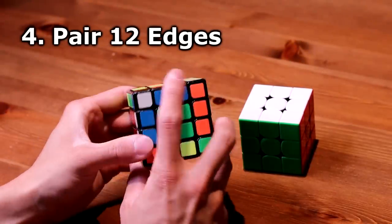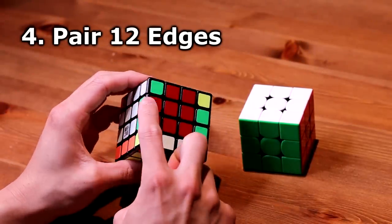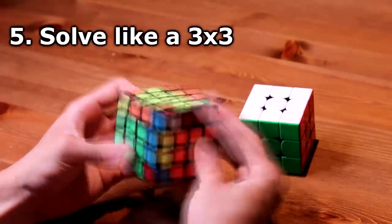Then all the edges will have been paired up. There are 12 total edges. And then I solve it just like a 3x3.